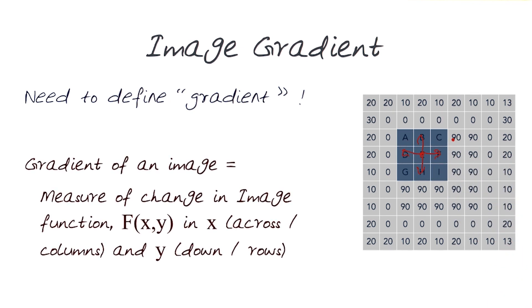A gradient basically is defined as a measure of change in an image function. So at this point, what are the changes of the image function with respect to how things change in the x direction, or in this case, the columns, or the y direction, the rows of an image?